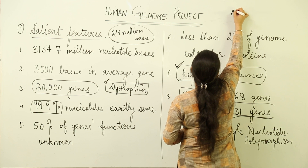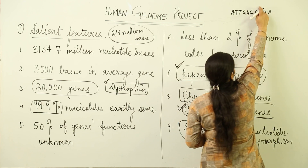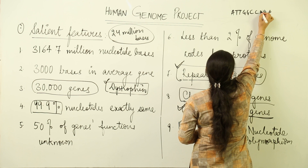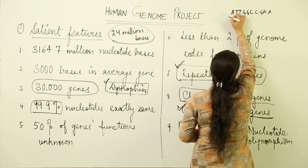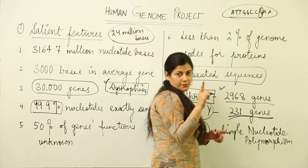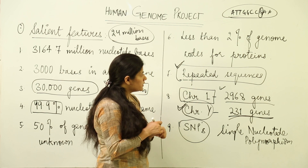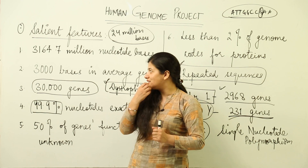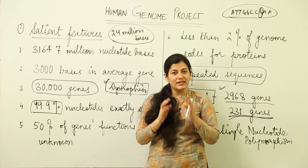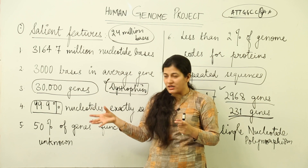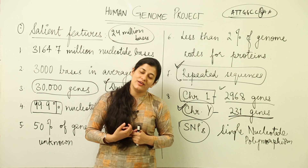For example, consider a sequence like A-T-T-G-G-C-C-T-A-A repeated many times. In one repetition, the T might be replaced by A; in another, replaced by C — the rest remains the same. This is single nucleotide polymorphism: only one base pair differs while the rest is identical. These are the salient features of the Human Genome Project — the information for which we invested 10 years and a huge amount of money.